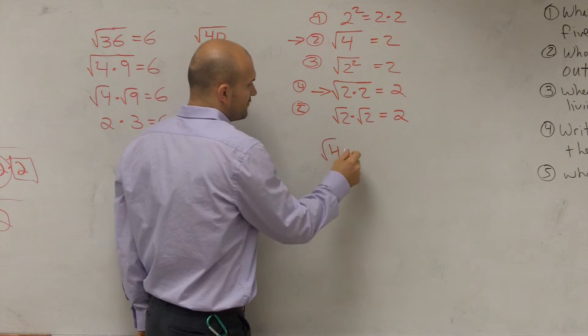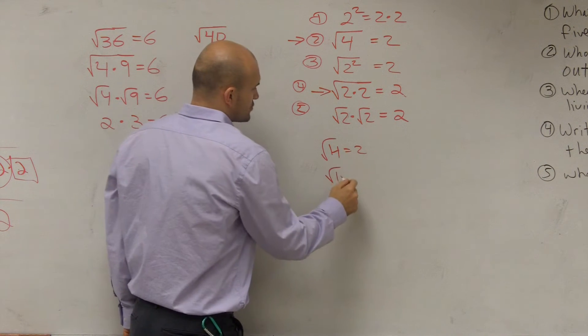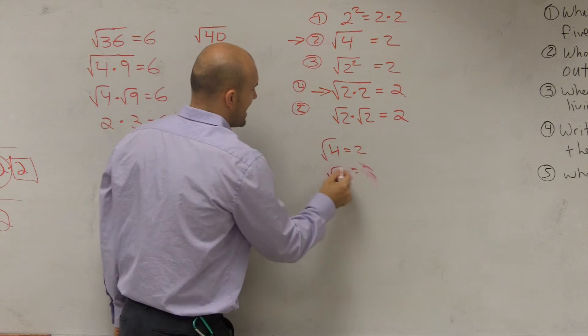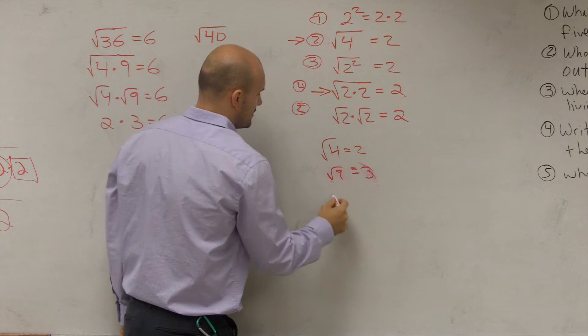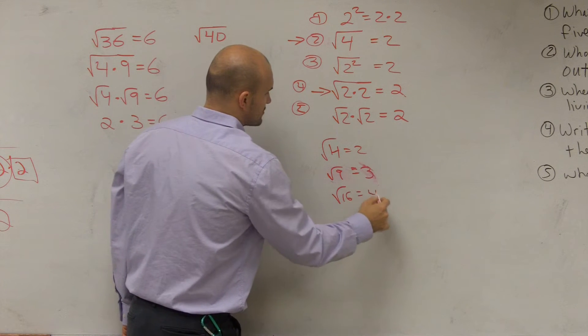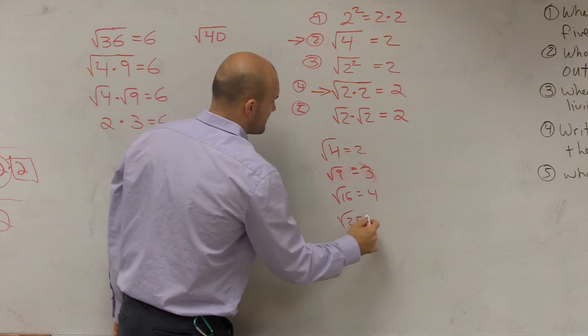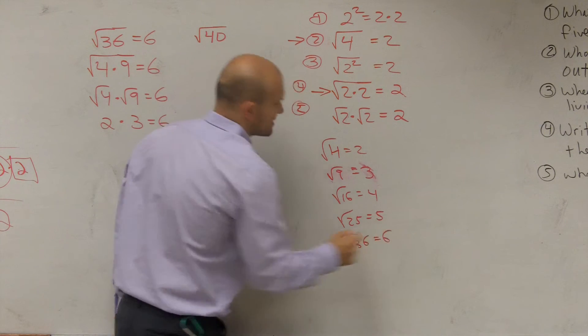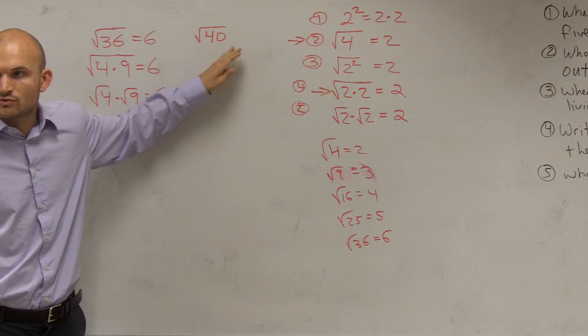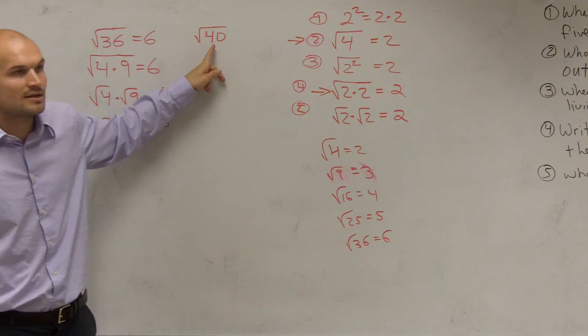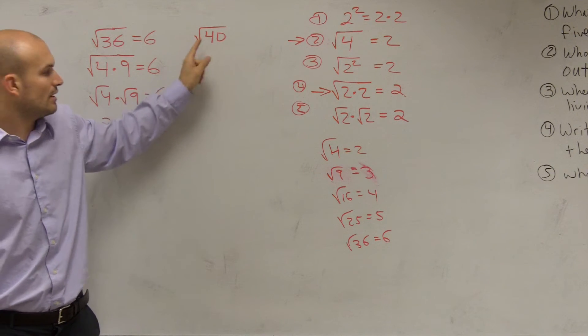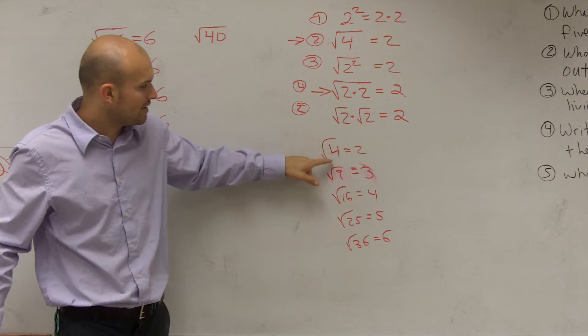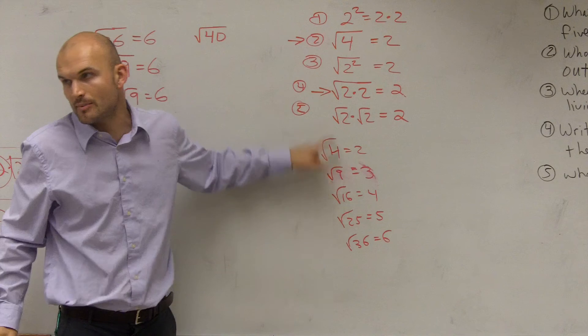We know that the square root of 4 equals 2. The square root of 16 equals 3. Sorry. The square root of 9 equals 3. The square root of 16 equals 4. The square root of 25 equals 5. The square root of 36 equals 6. Now, I'm not going to go anywhere higher than the square root of 36 because we're only at square root of 40. So what I want to do is, can I rewrite square root of 40 as one of my square numbers times another number?